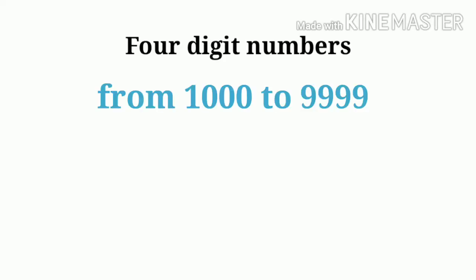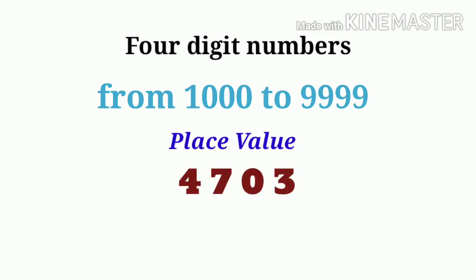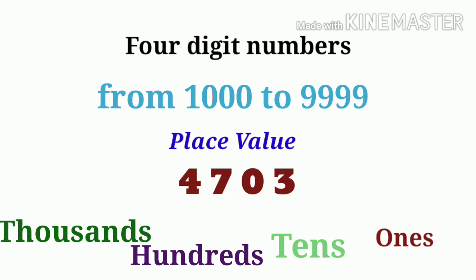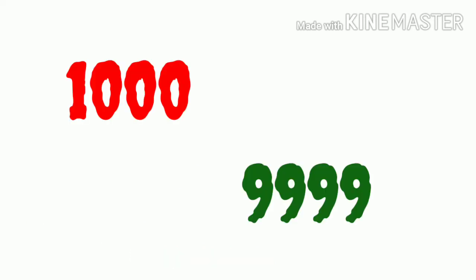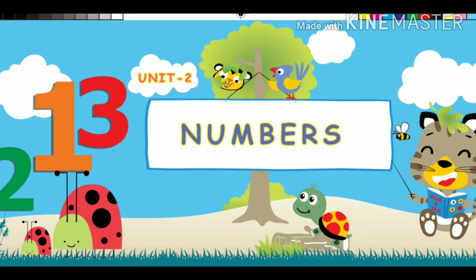Four digit numbers go from 1,000 to 9,999 and have four place values: ones, tens, hundreds, and thousands. For example, 4,703 has three ones, zero tens, seven hundreds, and four thousands. The smallest four digit number is 1,000 and the greatest is 9,999. Now we are going to learn numbers beyond ten thousand.